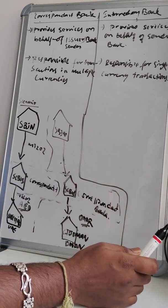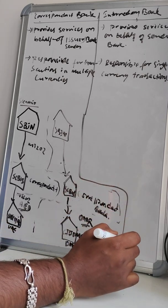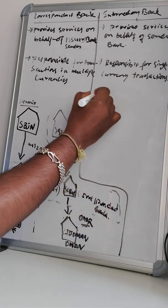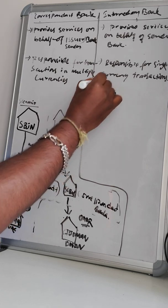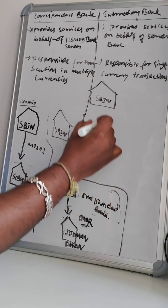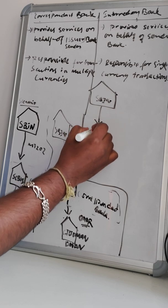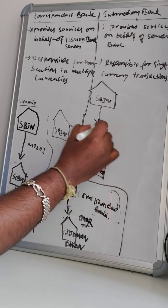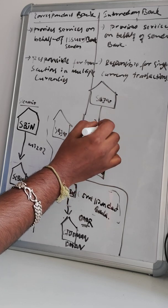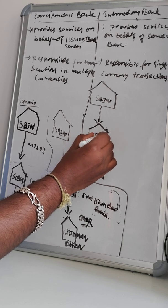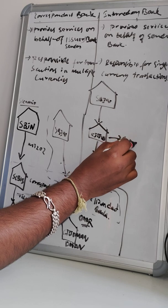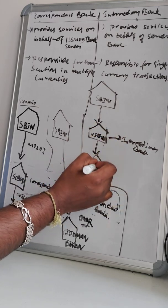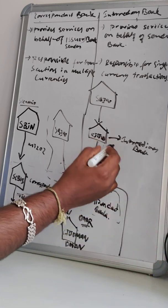Now let's talk about intermediary banks. An intermediary bank acts as a middleman agent bank for only one currency. For example, if SBI India wants to transfer a fund to Barclays US, they can assign Citi US as the intermediary bank, which will make the payment locally in USD to the Barclays US bank.